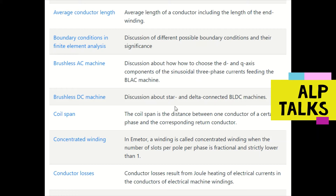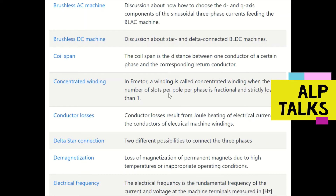Brushless AC machine refers to how we choose the d and q axis components of sinusoidal three-phase currents feeding the BLDC machine. Brushless DC machine refers to how to connect star and delta configurations in BLDC machines.